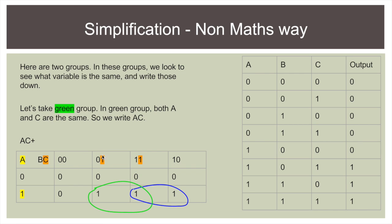And C stays the same. So we can see up here, C is 1, C is 1, B is 0 and B is 1. So C stays the same here. So we write A C.